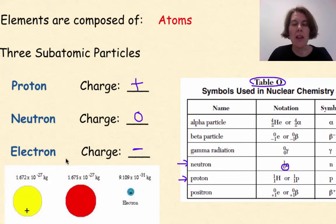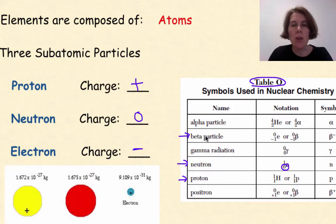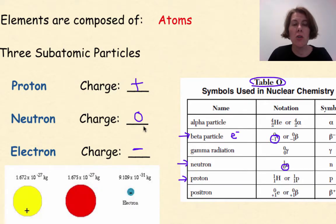An electron has a negative charge. The particle associated with an electron is a beta particle. If you remember back from nuclear chemistry, a beta particle is just a high-speed electron, and that's where we get our negative one. So: protons, neutrons, and electrons.